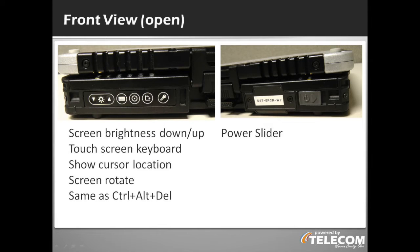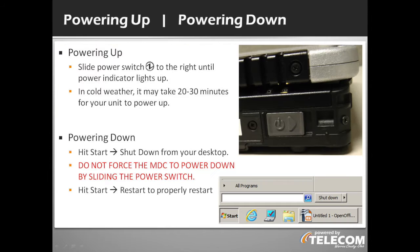Looking at the closed CF-19, you notice buttons in the bottom left corner. These control screen brightness, exposing a touchscreen keyboard, showing the cursor location, rotating your screen, and locking your screen. On the right side is the power slider. Slide the switch to the right until the power indicator lights up, then release. Do not force the MDC to power down by sliding this power switch, as this can cause hardware and software failures. Use the start menu from your desktop to shut down or restart your machine.